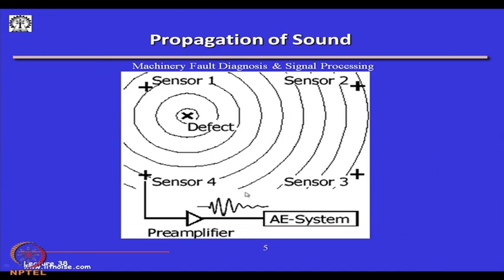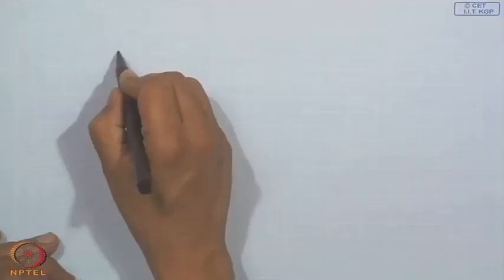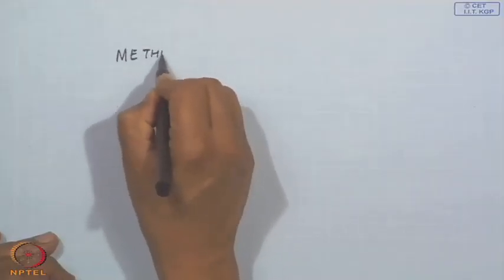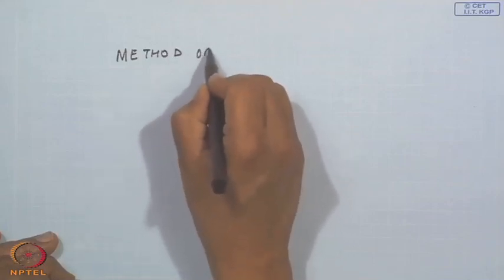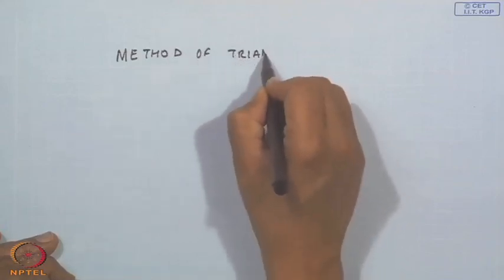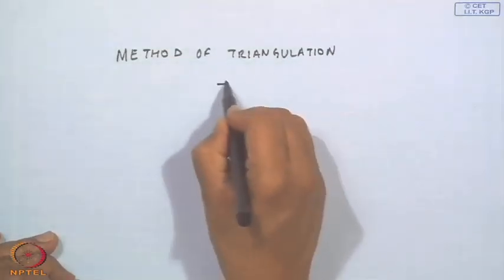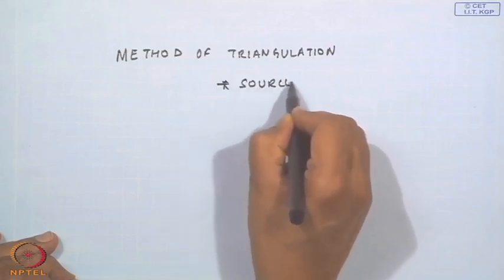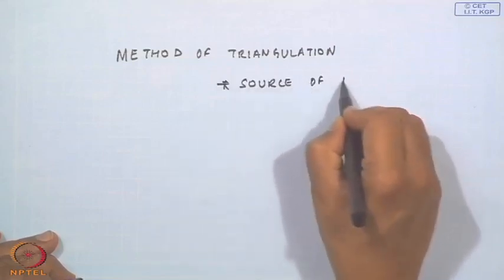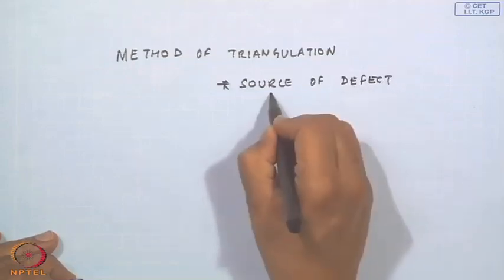As this diagram shows, many sensors can be placed around a location, and each sensor will give an acoustic emission signal. By the method of triangulation, the source of the defect can be identified.